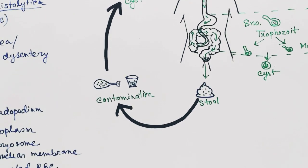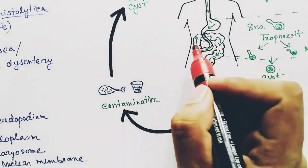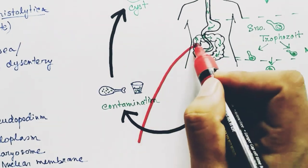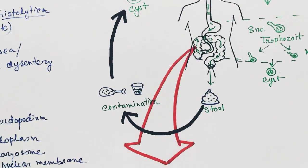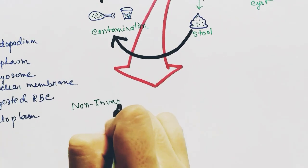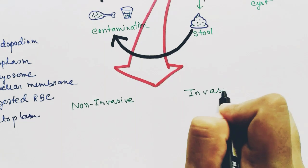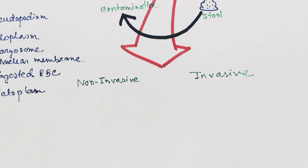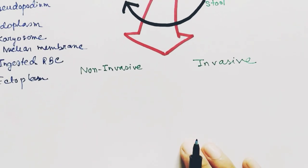Thus it can infect another human being. Now if we zoom into the colon, we can see there are two types of Entamoeba histolytica infection: one is non-invasive and the other is invasive.